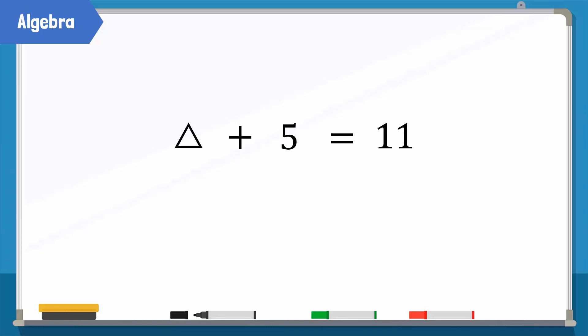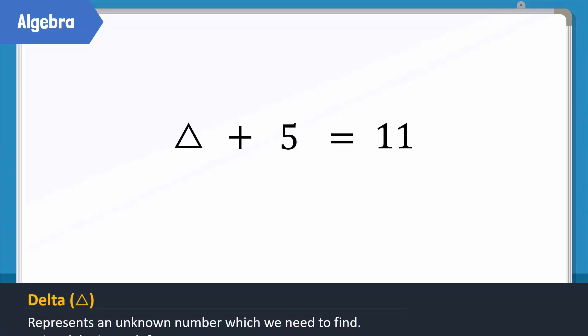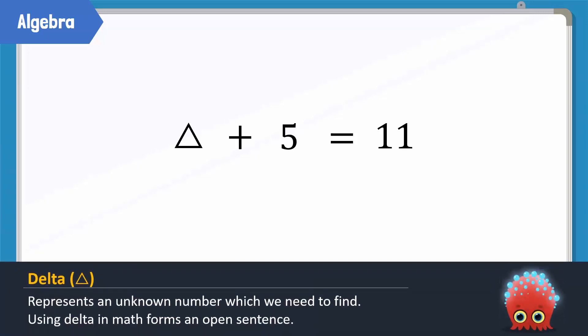Delta plus 5 is equal to 11. The delta symbol tells us that it represents an unknown number we need to find. This statement is called an open sentence, as delta can be any number.